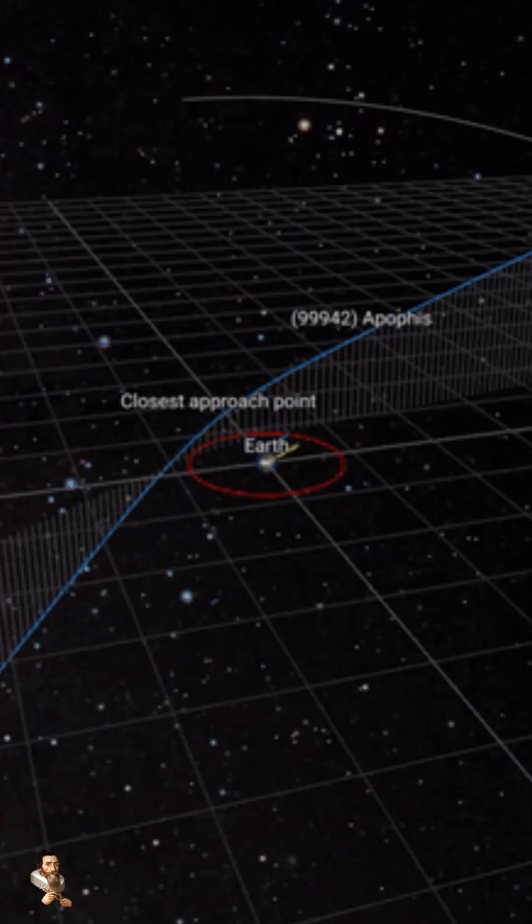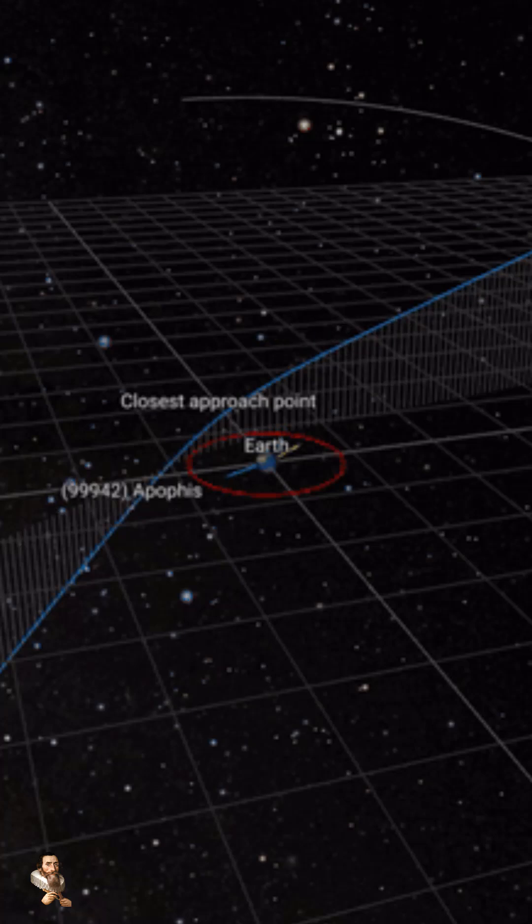Recent studies have suggested that while the chances of Apophis hitting our planet are minimal, a collision with a smaller object in space could alter its trajectory, potentially setting it on a collision course with our planet.